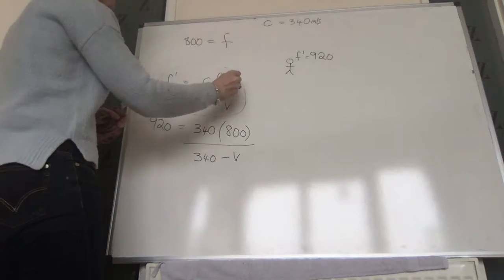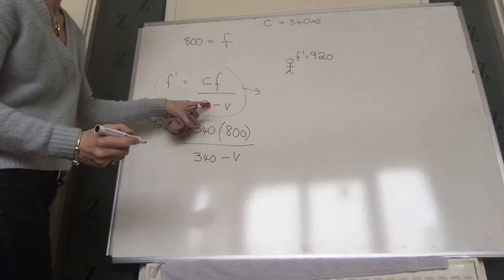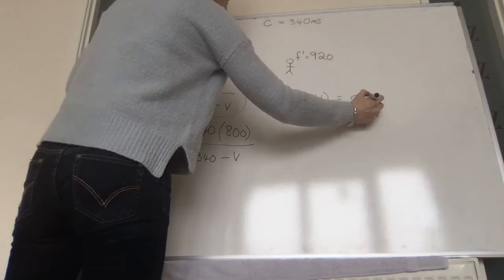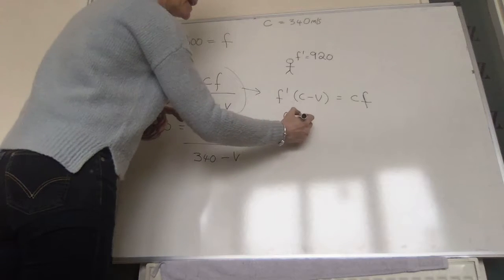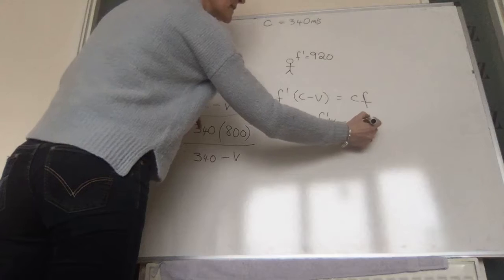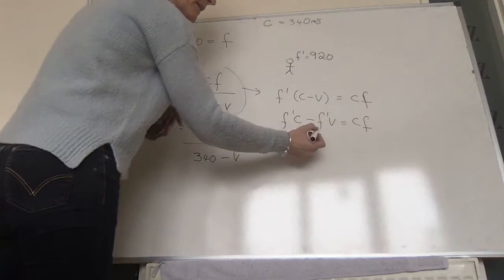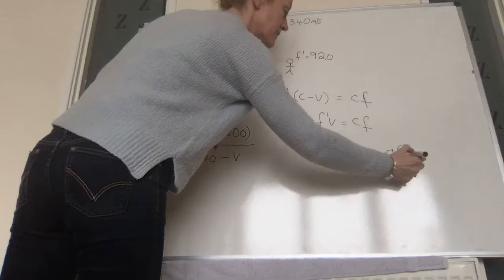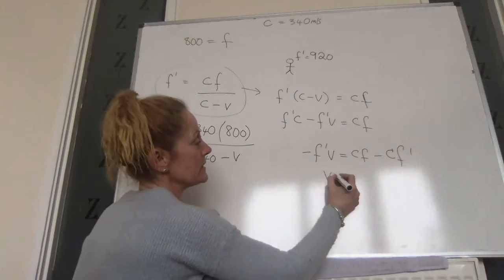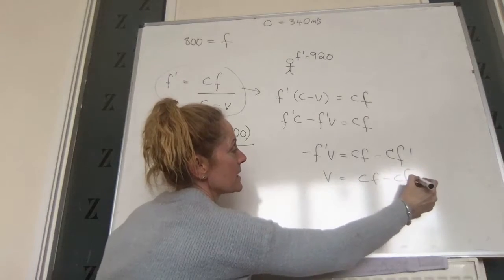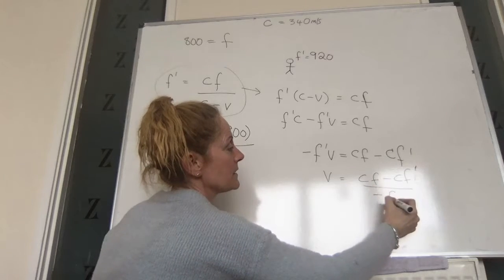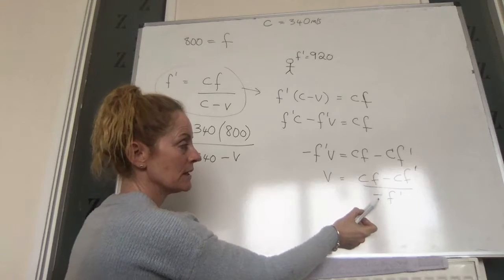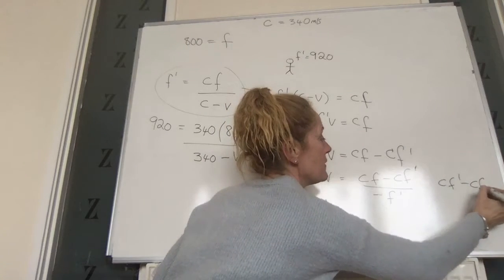Let's rearrange it — it's a good maths exercise. If we want V on its own, multiply both sides by C minus V to get: F-dash times (C minus V) equals C times F. Expanding the brackets: F-dash·C minus F-dash·V equals C·F. Rearranging: minus F-dash·V equals C·F minus C·F-dash, so V equals (C·F minus C·F-dash) all over minus F-dash. You can also multiply top and bottom by minus 1 to get (C·F-dash minus C·F) over F-dash, or factor out C.